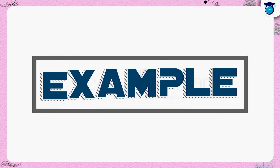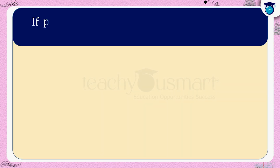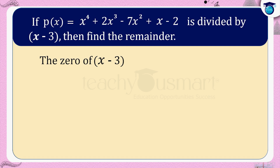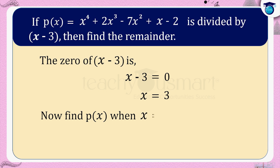Let's do one example. If a polynomial p of x equals x raised to 4 plus 2x cubed minus 7x squared plus x minus 2 is divided by x minus 3, then find the remainder. First, let us find the zero of x minus 3 — put x minus 3 equals 0, we get x equals 3. Now put x equals 3 in p of x. Then by the remainder theorem, the remainder r equals p of 3.